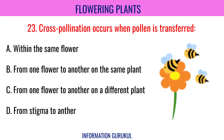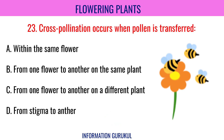Cross-pollination occurs when pollen is transferred from one flower to another on a different plant.